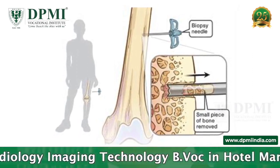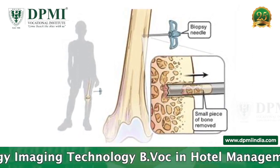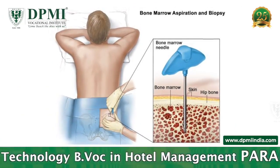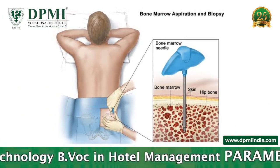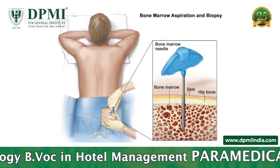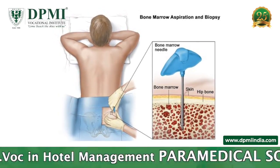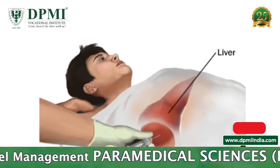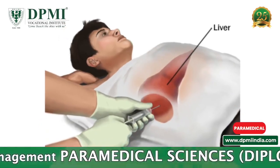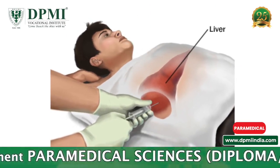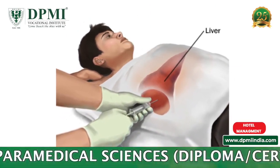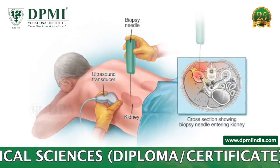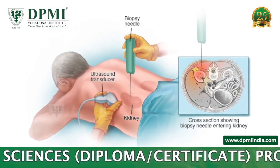In a bone marrow biopsy, a large needle is used to enter the pelvis bone to collect bone marrow, detecting blood diseases such as leukemia or lymphoma. In a liver biopsy, a needle is injected into the liver through the skin over the abdomen to capture liver tissue.